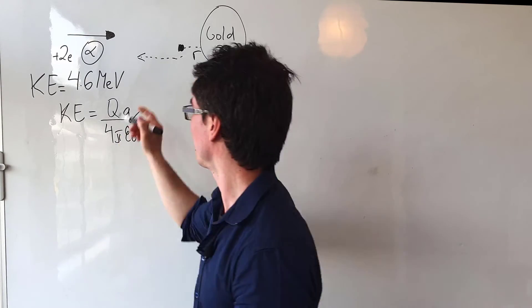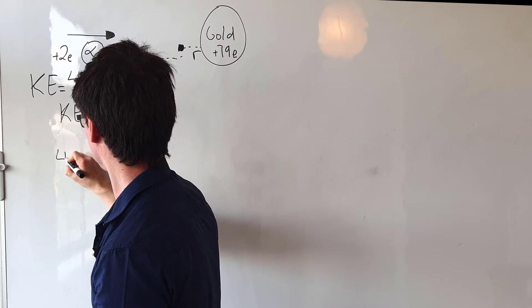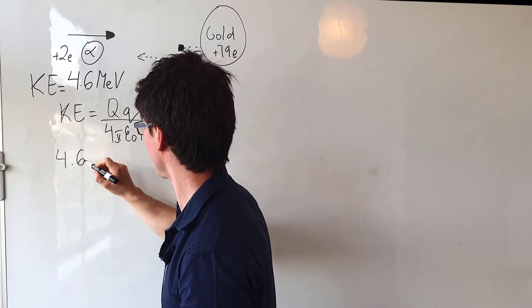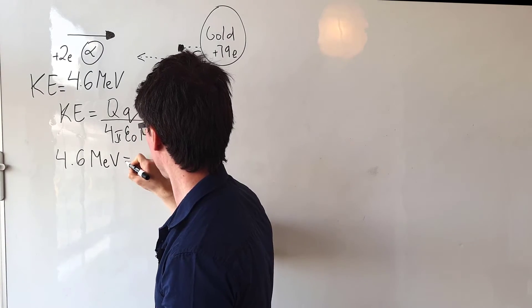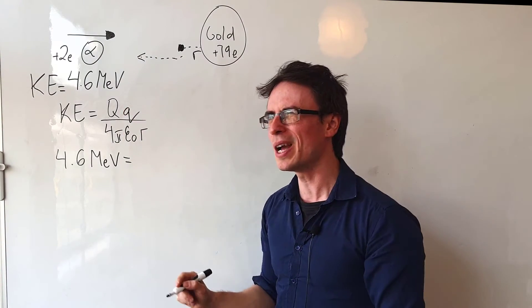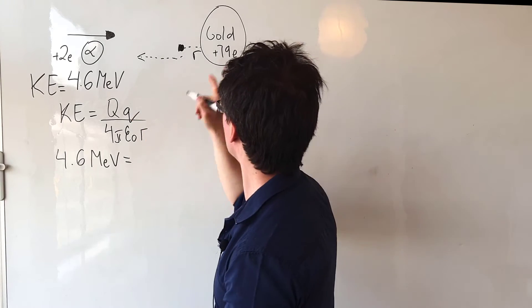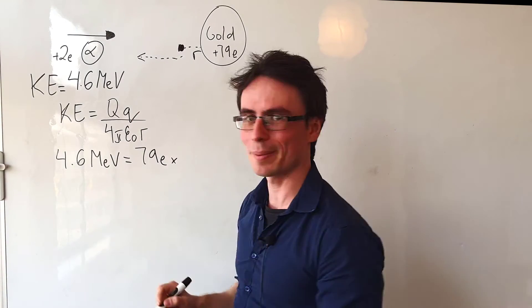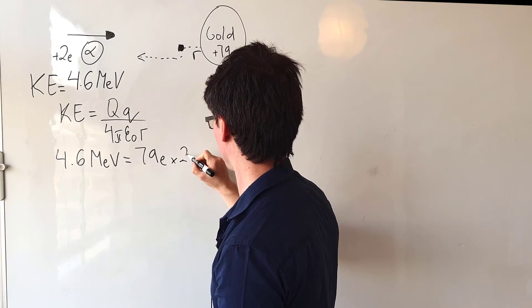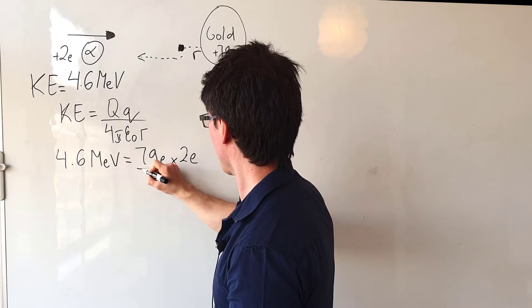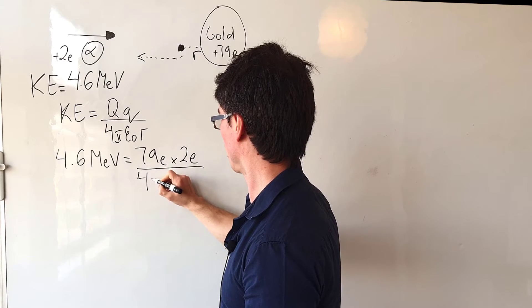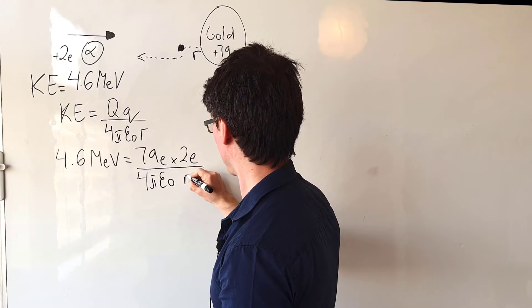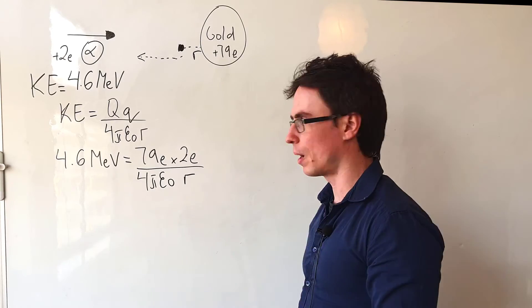Let's plug in some numbers. So let's say that our kinetic energy that's been transferred to potential energy is 4.6 mega electron volts, and that is turned to q. One of the charges is going to be 79E multiplied by the other charge, which is just 2E. And then we're going to be dividing that by 4π epsilon naught multiplied by r.